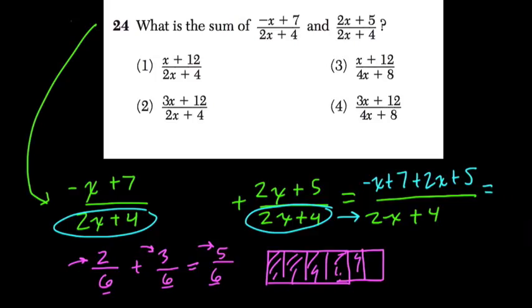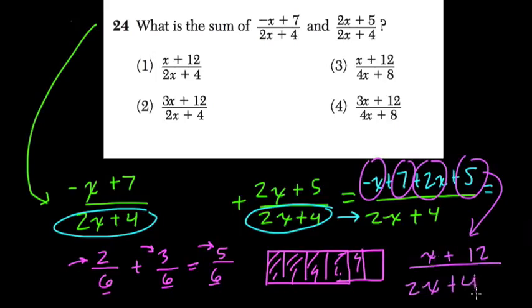I'm going to use the associative property here because I'm just adding after all, and 5 and 7 will come first to 12, and 2x and negative x. That's just x. So it's x plus 12 over 2x plus 4.